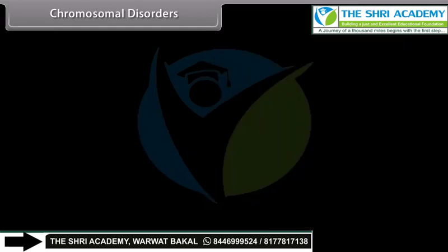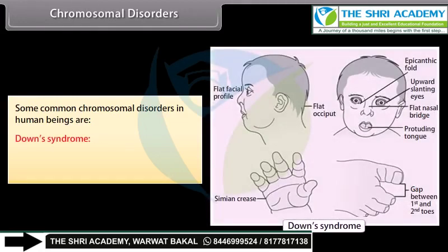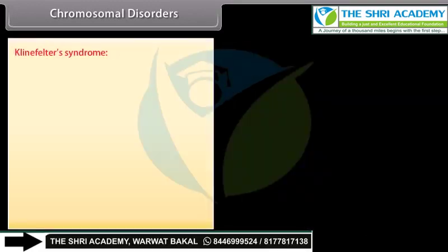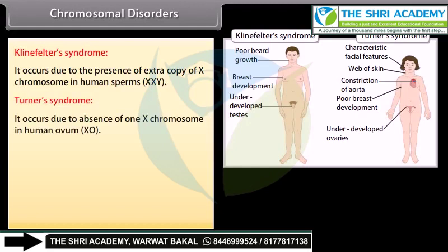Some common chromosomal disorders in human beings are: Down's Syndrome — occurs due to trisomy of chromosome number 21. Klinefelter's Syndrome — occurs due to the presence of an extra copy of X chromosome in human sperms (XXY). Turner's Syndrome — occurs due to the absence of an X chromosome in human ovum (XO).